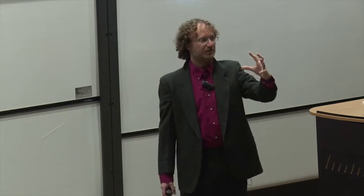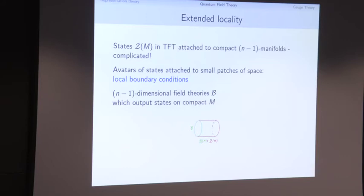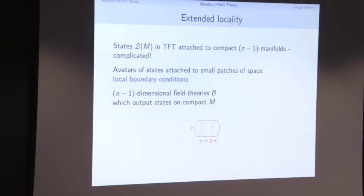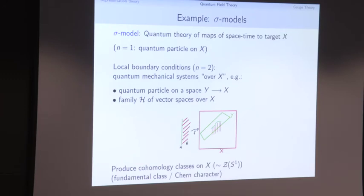A local boundary condition is an (n−1)-dimensional field theory — it lives on the boundary as a local expression — but it produces states: it's a mechanism that generates states for the original theory when placed on a compact manifold. So it's a local object that integrates to give global states. A boundary condition B, when wrapped on a compact manifold, gives a particular element of the space of states on that compact manifold.